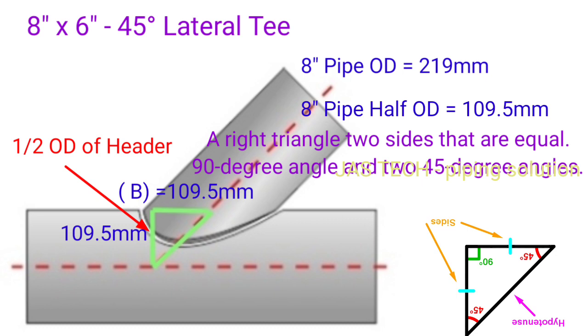That means one 90 degree angle and two 45 degree angles. So one side of the triangle is 109.5mm. For 45 degrees, the other side is also 109.5mm. So B length equals 109.5mm.